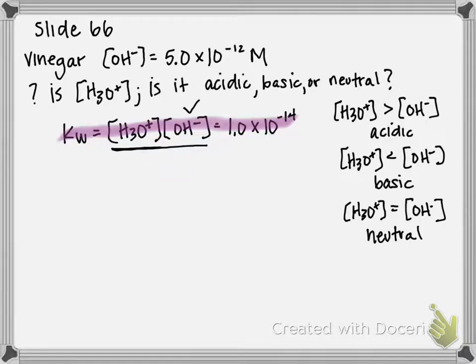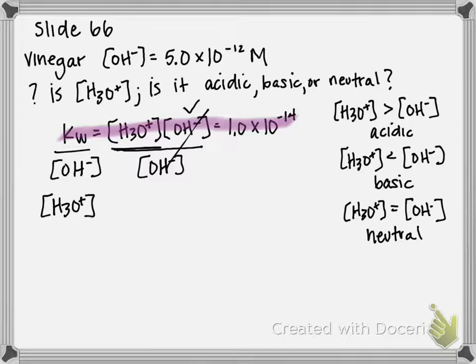We already know what OH- is. What we're trying to do is get H3O+ by itself. My apologies. So we're going to divide by OH- on both sides to get H3O+ by itself, because that's what we're looking for. Therefore, our hydronium concentration equals Kw over our hydroxide concentration.